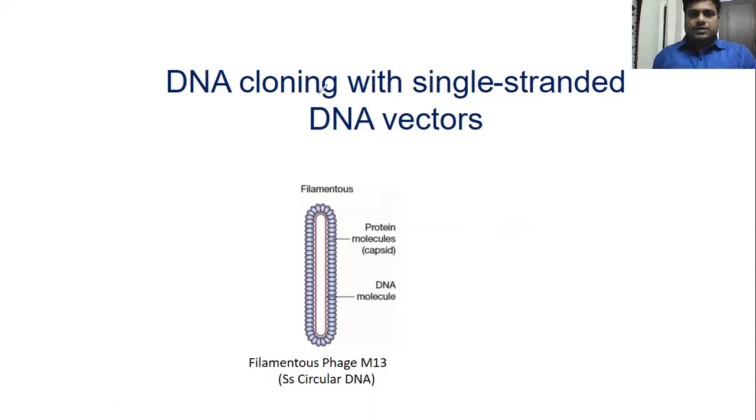DNA cloning with single-stranded DNA vectors. Here the vector we are going to use is M13, which is single-stranded circular DNA. As you can see here, this is a circular one made of certain protein molecules called capsid, and inside there is genetic material - single-stranded circular DNA of 6,407 base pairs.